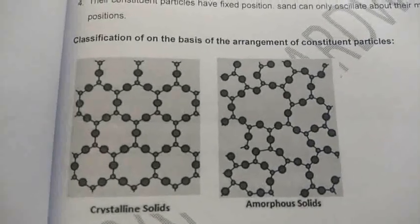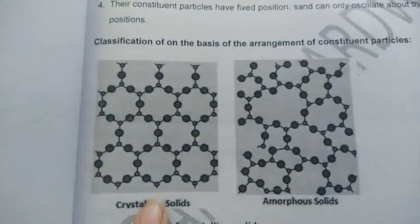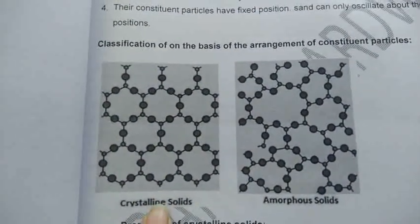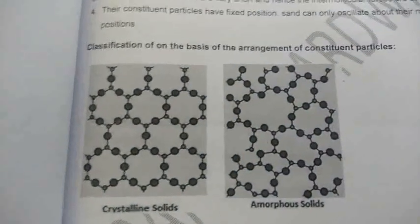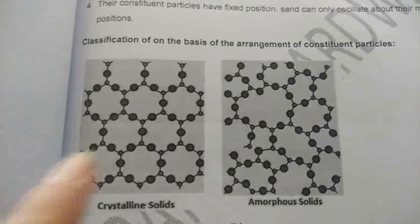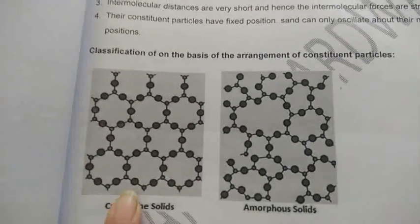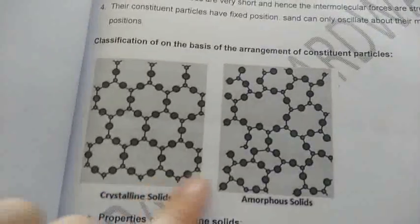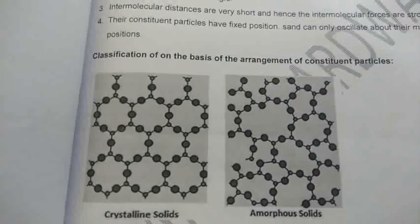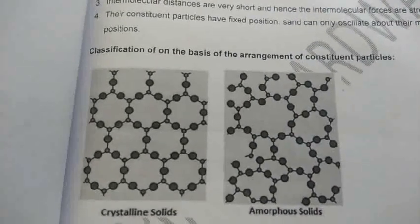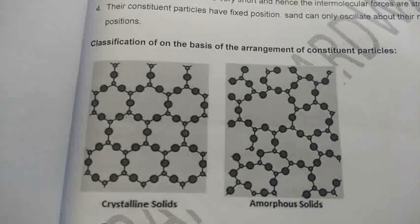Solids can be classified on the basis of arrangement of their atoms into two types. 99.99% of solids have a perfect crystalline structure. Very few are amorphous, like glass and silica, which fall under the category of amorphous solids. They don't have 100% properties of solids.